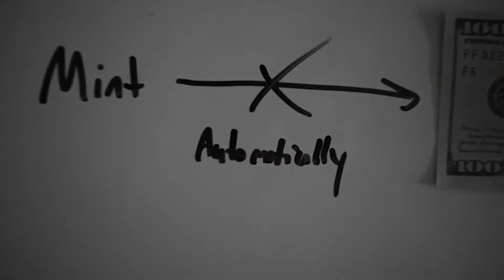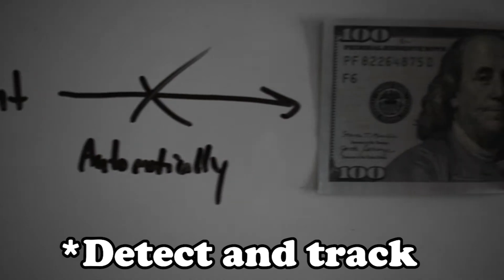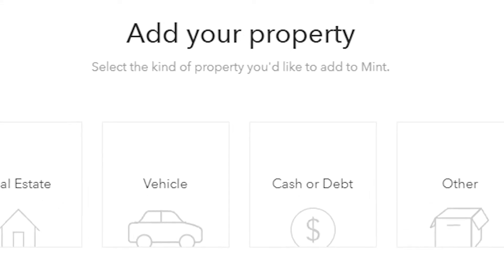Now that we have all of your accounts linked and your transaction history fixed, Mint still might not have a fully accurate portrayal of your finances and your net worth. This is because Mint cannot automatically track money or assets that you have offline, and there are also some online accounts that Mint just doesn't offer support for, at least not yet. This is where the property account category comes in — it allows you to keep track of offline accounts or those not supported by Mint.